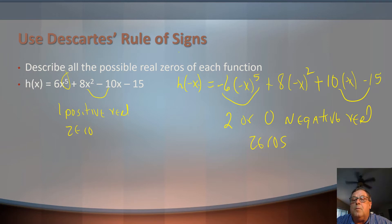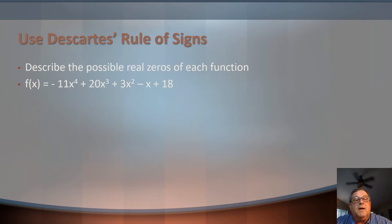Let's look at one more, and hopefully this will help clear it up. Here I've got negative 11x to the 4th plus 20x cubed plus 3x squared minus x plus 18. So let's look at our sign changes. This is going to tell me the positive. This is f of x, positive real zeros.